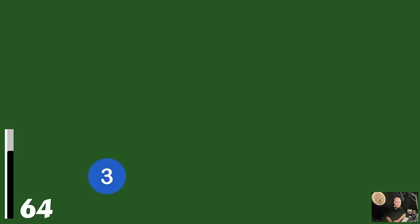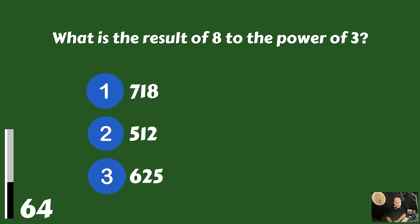What is the result of eight to the power of three? Seven hundred and eighteen, five hundred and twelve, or six hundred and twenty-five? Eight to the power of three is five hundred and twelve.